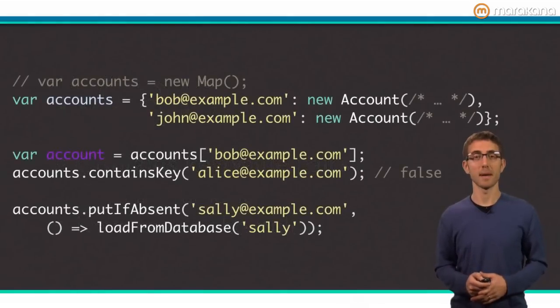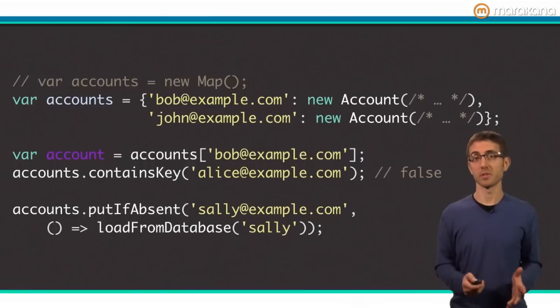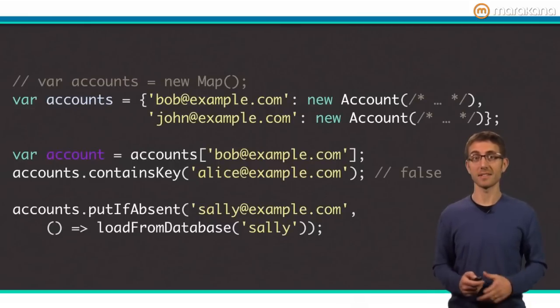Here is some example code that uses map. You can see how maps work great with their literal values. Don't be fooled though, maps aren't like JavaScript objects. In Dart, only objects that implement the map interface can be treated as a map. Of particular note is put if absent, which will call a function and insert its result only if the key does not exist in the map.